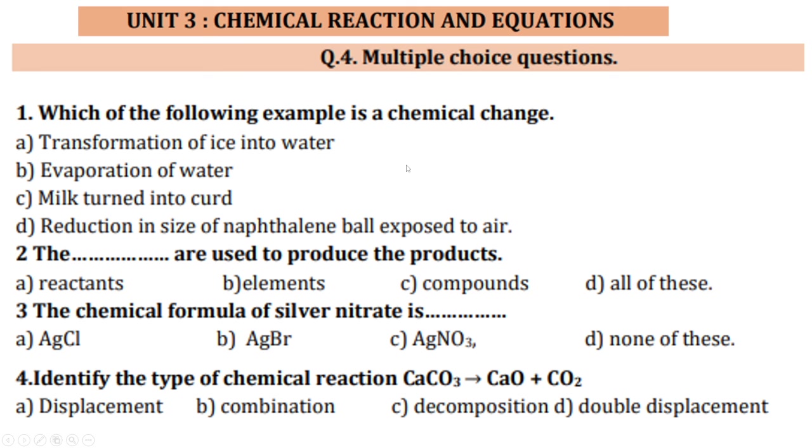Multiple choice questions. Which of the following example is a chemical change? Transformation of ice into water, this is physical change. The evaporation of water means water to vapor, it is also a physical change. Milk turned into curd by some reaction, it is chemical change. Reduction in size of naphthalene balls exposed to air, this is also a physical change. Therefore correct answer is C, milk turned into curd is the example of chemical change.